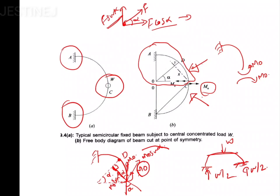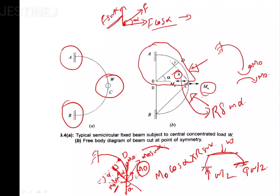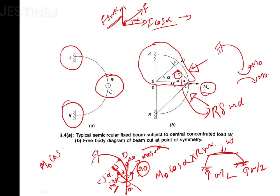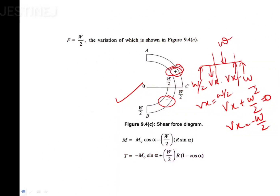Our ultimate aim is to form the equation for bending moment. The influence of M0·cos(alpha) at section D is M0·cos(alpha) itself, acting parallel to cause a sagging moment, which is positive. If you take a beam and apply a moment, it bends in a sagging manner, so we write it as positive.